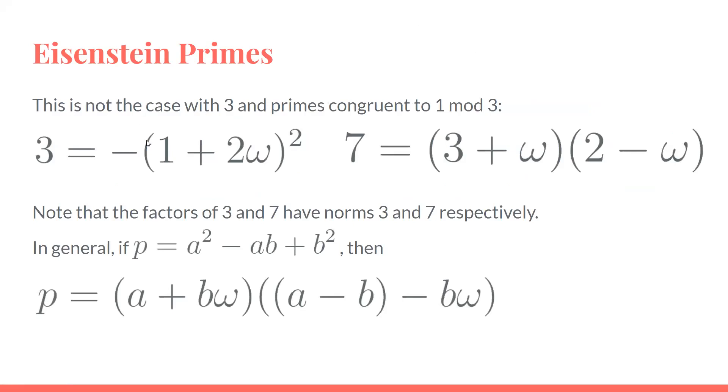Unfortunately, this isn't the case with primes congruent to 0 or 1 mod 3. We see here 3 = -(1 + 2ω)², and 7 = (3 + ω)(2 - ω). But you'll note that the factors of these numbers have the same norms. This is still working out where the norm of 3 is 3², and it factors into two things with norm 3.